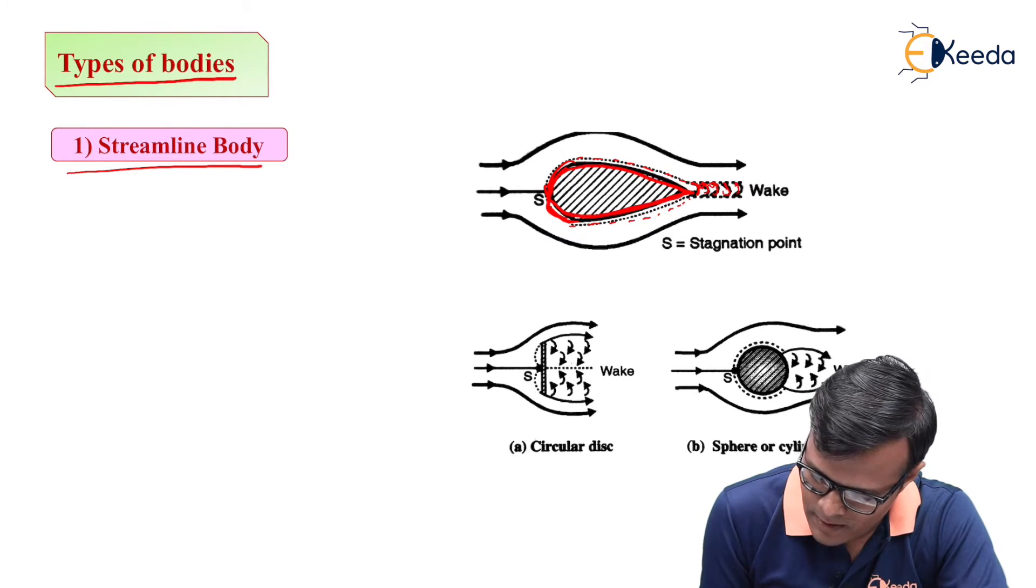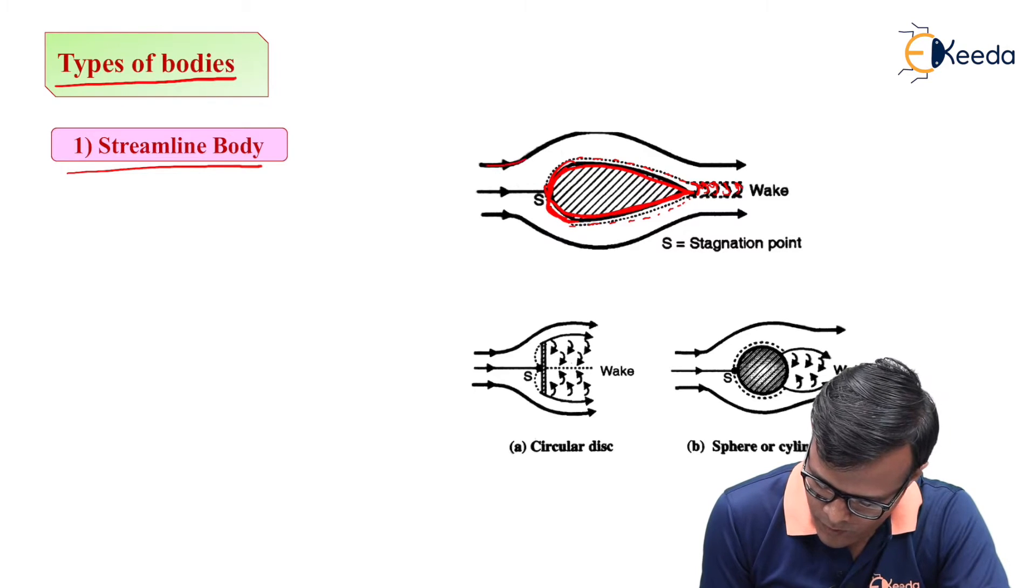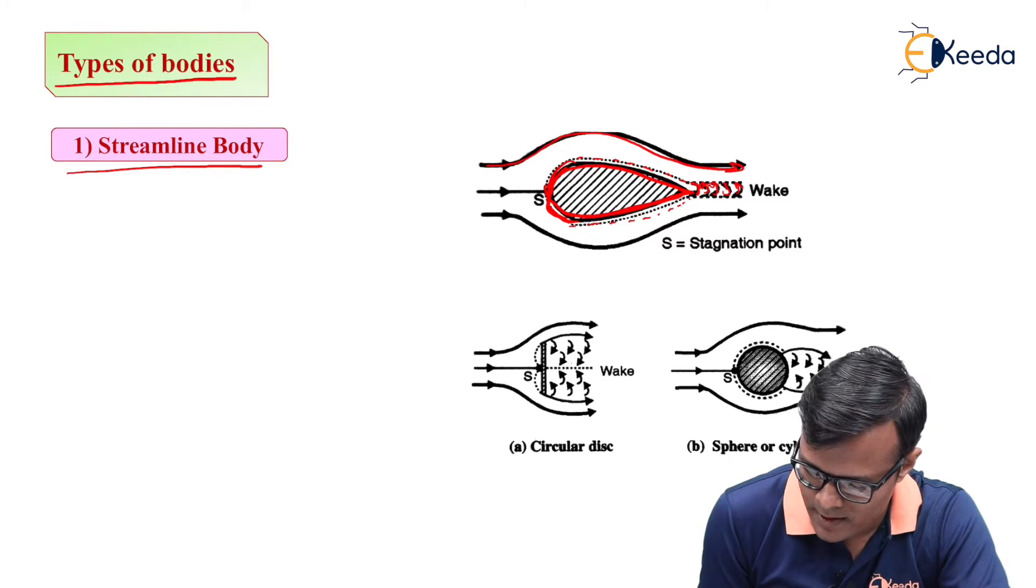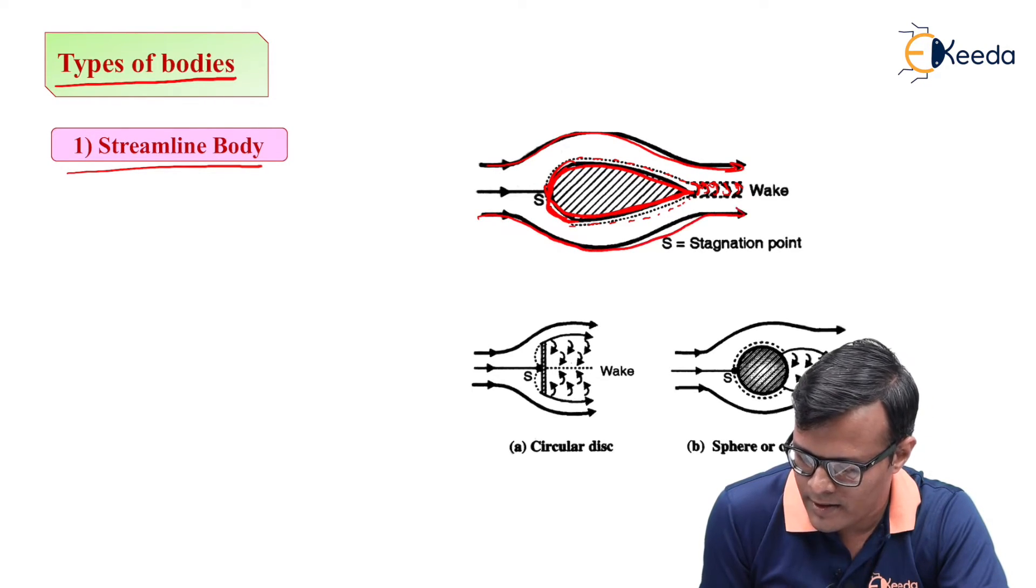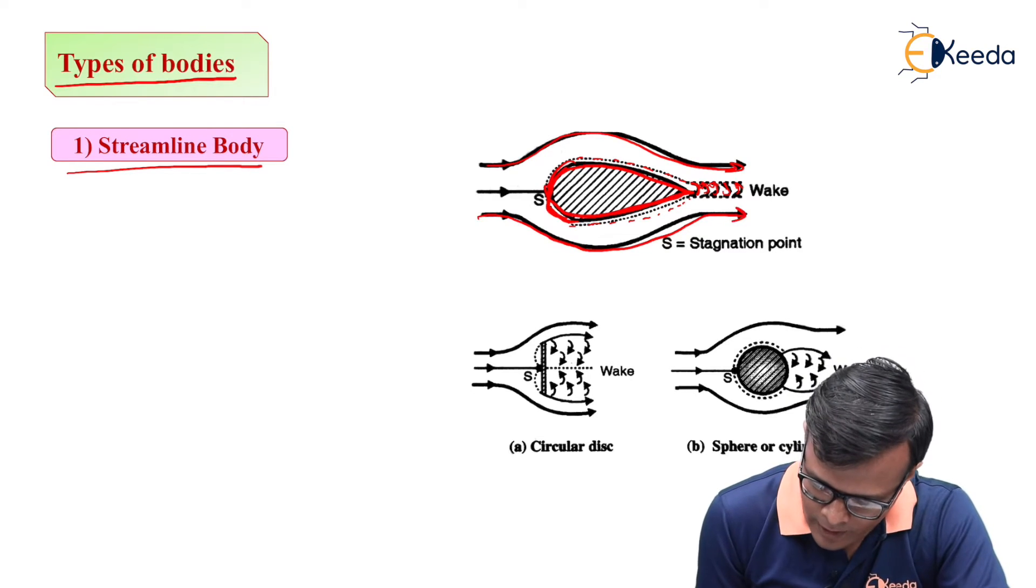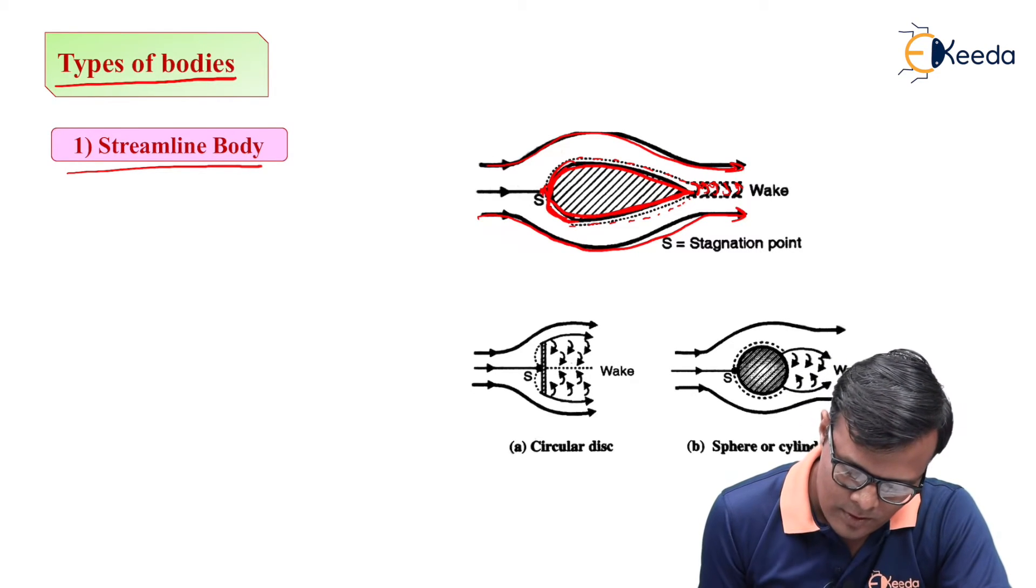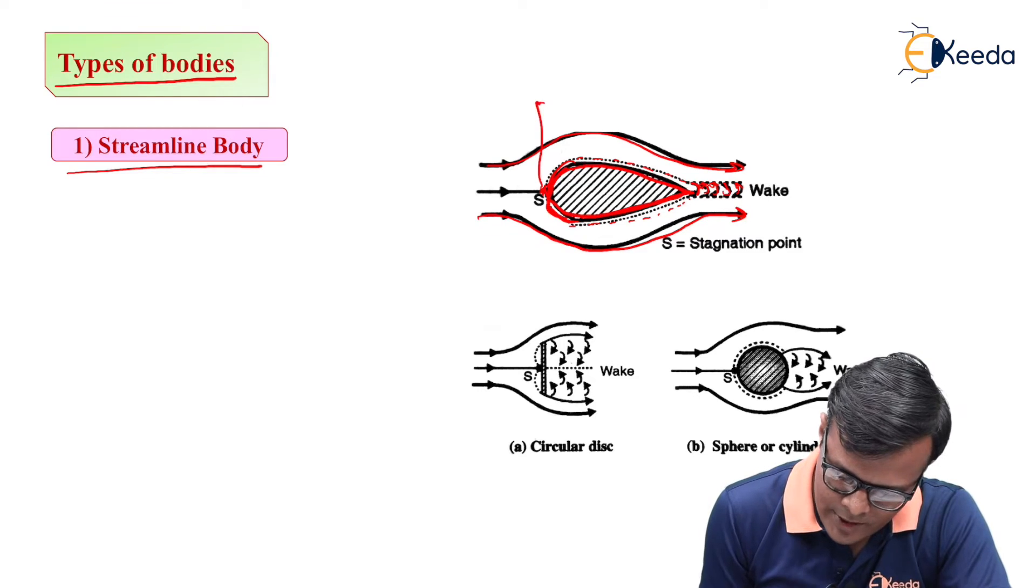These are the formed wakes when flow is considered in the direction like this. The starting point is called as stagnation point.